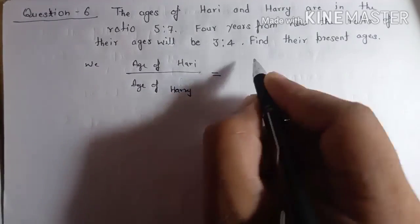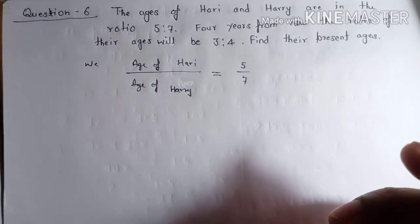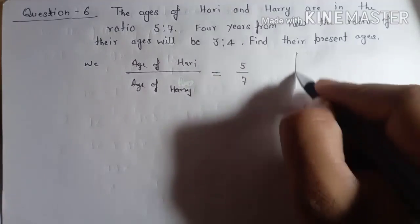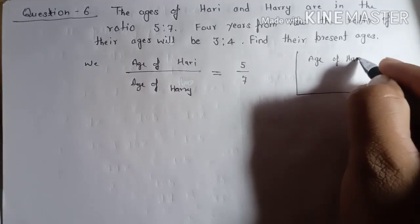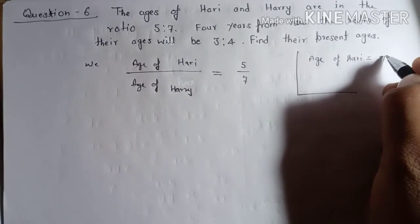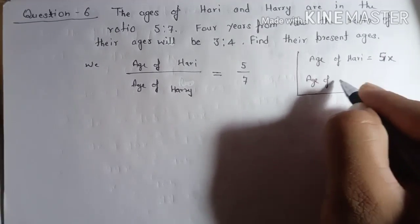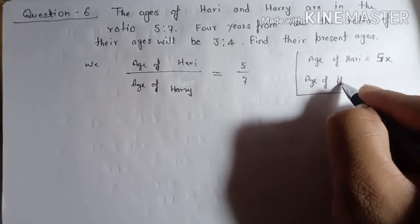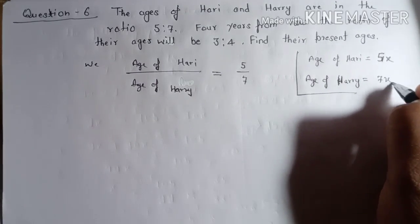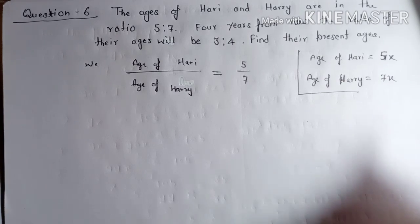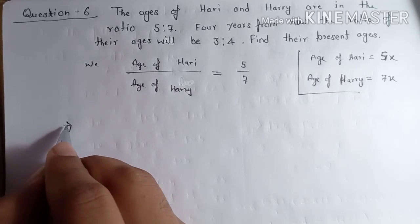Let the age of Harry be five x, and the age of the other Harry be seven x. We have discussed why we consider x here — attend your online classes regularly and you will get everything.